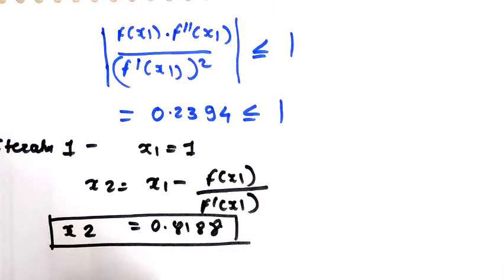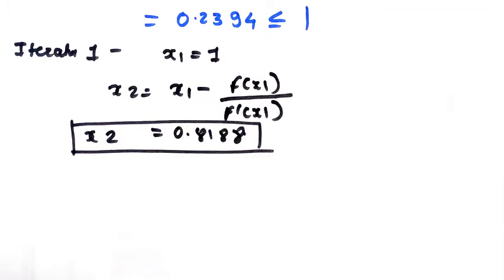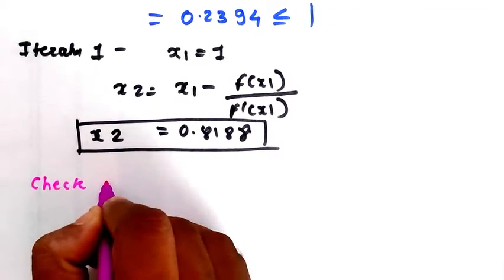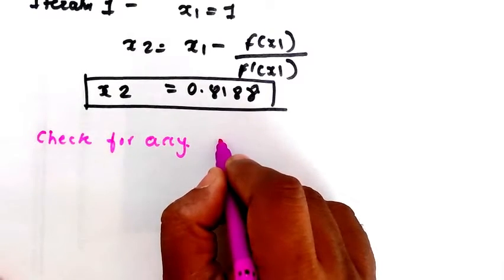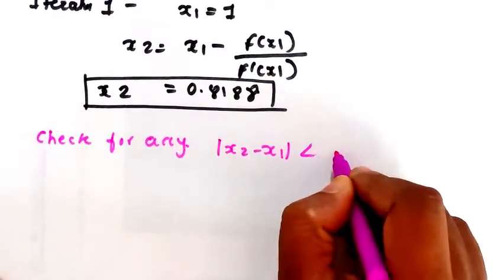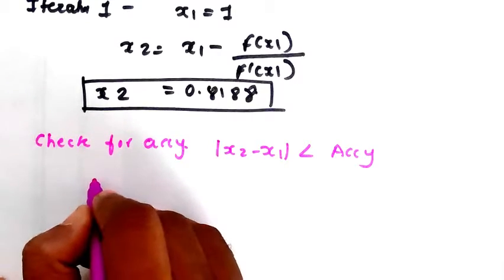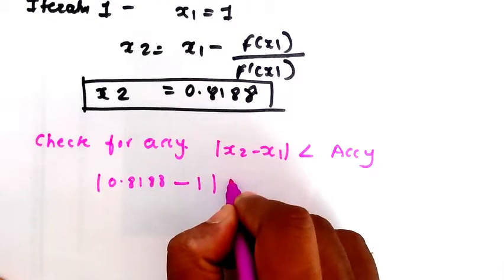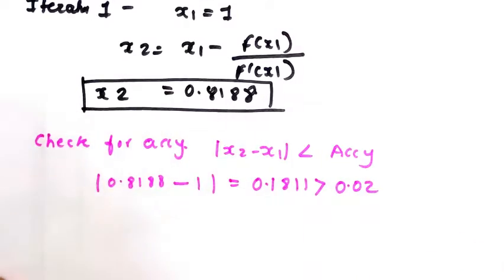Now check the accuracy criteria. The accuracy given is 0.02. The accuracy condition is |x₂ - x₁| < accuracy. Checking: |0.8188 - 1| = 0.1811, which is greater than 0.02. So the accuracy condition is not satisfied. We will go to the next iteration.